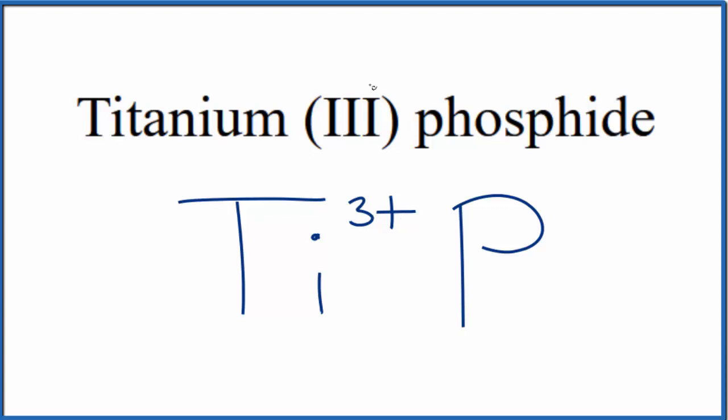We know that titanium is 3 plus because of the Roman numeral. Phosphorus forms the phosphide ion. If you look at phosphorus on the periodic table, group 15, sometimes called 5A, that's 3 minus.